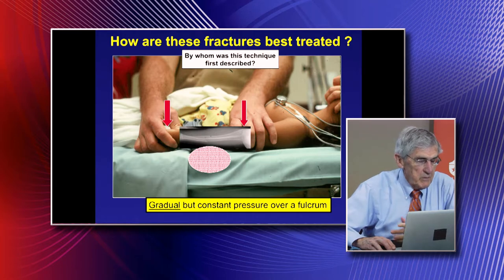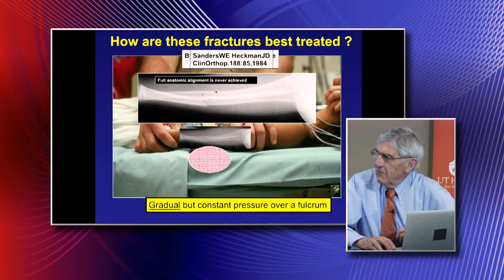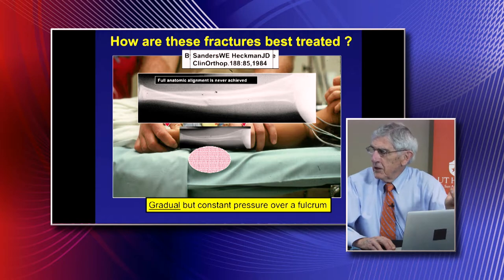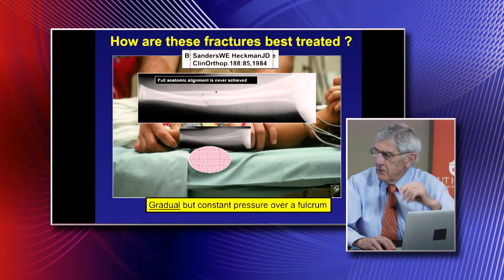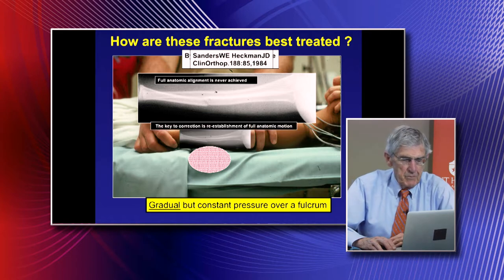This technique was described about 30 years ago by orthopedic resident Bill Sanders and Dr. Hickman in a classic 1984 article. You'll probably never get it fully anatomically realigned, but the clue that you have satisfactory alignment is restoration of full supination and pronation. Even if still a little crooked, that's probably acceptable given remaining remodeling capacity. The key is reestablishment of full anatomic motion.